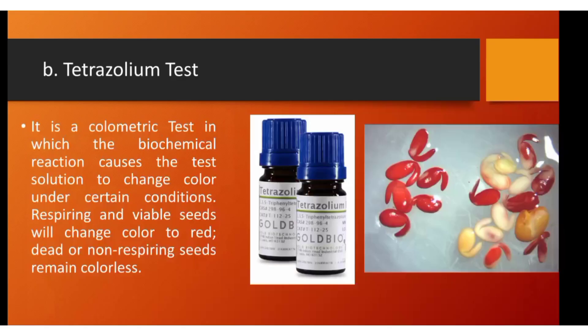For method B, we have the tetrazolium test. Seeds are treated with chemicals to determine if they are viable or not. If they are viable, the seed will turn pink to red. If not viable, it will remain colorless or its natural color. It is a colorimetric test where the chemical reaction causes the solution to change color — respiring viable seeds turn red, while dead or non-respiring seeds remain colorless.